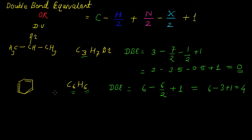This 4 is nothing but the 3 double bonds — we can see here that we have these 3 double bonds. And one more double bond equivalence due to this particular ring, because benzene contains one ring like this. It means that the double bond equivalent in benzene is 4.